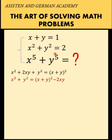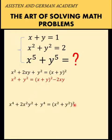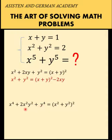So let's subtract 2xy from both sides and we arrive at this — this is our representation for x squared plus y squared, which is equal to 2. We are going to go back to this later on. Now let's represent the square of the binomial x squared plus y squared in order to get the x to the fourth plus y to the fourth term.